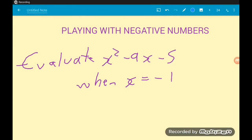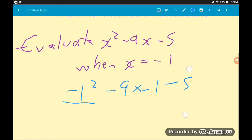First up, be very very careful with negative numbers and your calculator. Say that we had this question here where we wanted to evaluate x squared minus 9x minus 5 when x is minus 1. A lot of people would put in minus 1 squared minus 9 times minus 1 minus 5. Well that's not going to give us the right answer. The problem there is this first bit: minus 1 squared.